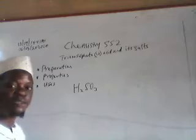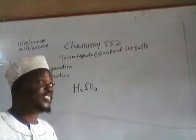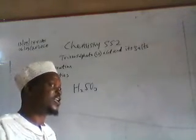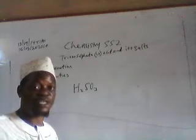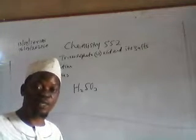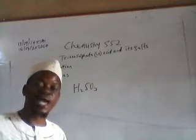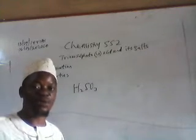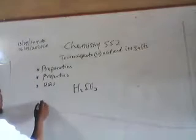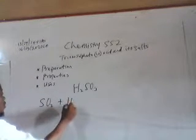How is the acid prepared? It is very easy. Just like we have just mentioned — when sulfur oxide dissolves in water, the acid is prepared. Therefore, trioxosulfate 4-acid is prepared in the laboratory by dissolving sulfur oxide in water.